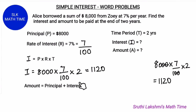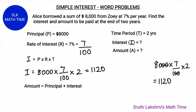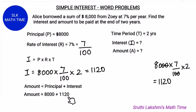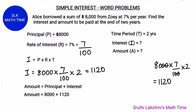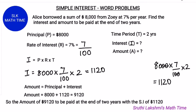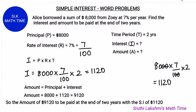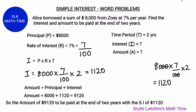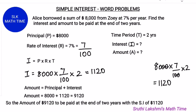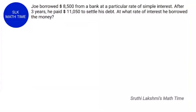Now to find the amount, the formula is principal plus interest. Here we know the principal and the interest, so the principal is $8000 and the interest is $1120. When we add these together we get the amount which is $9120. So Alice has to pay $9120 at the end of two years with a simple interest of $1120 to Zoe.